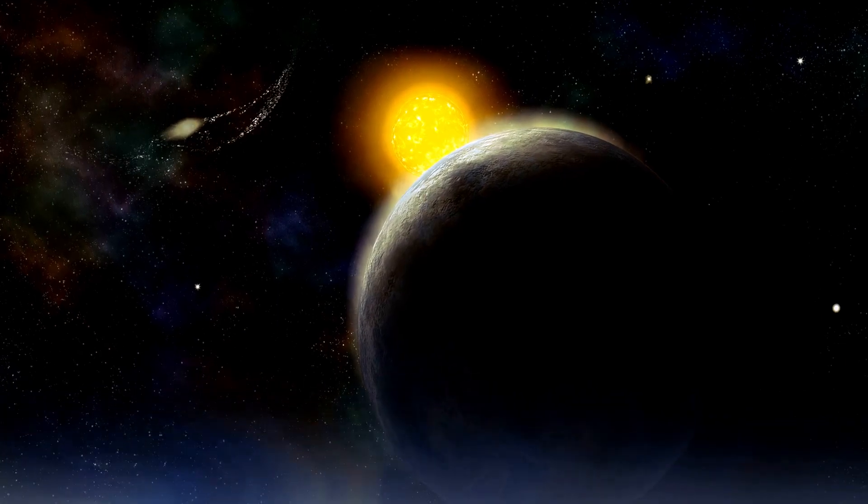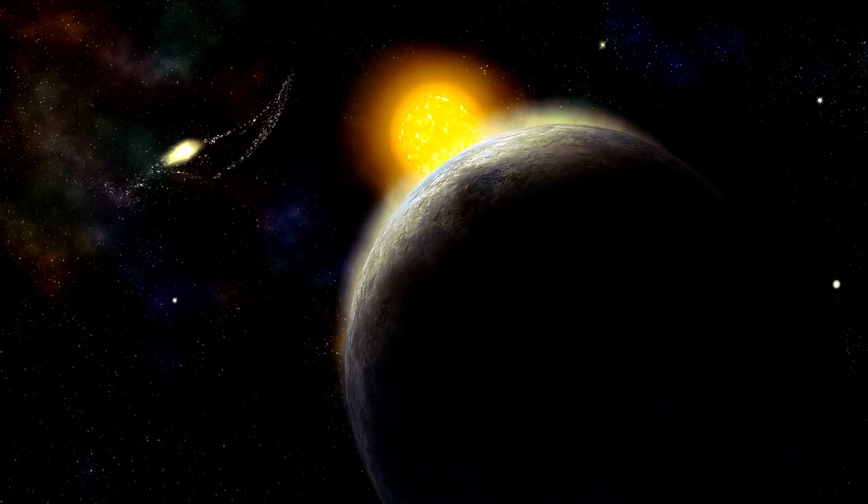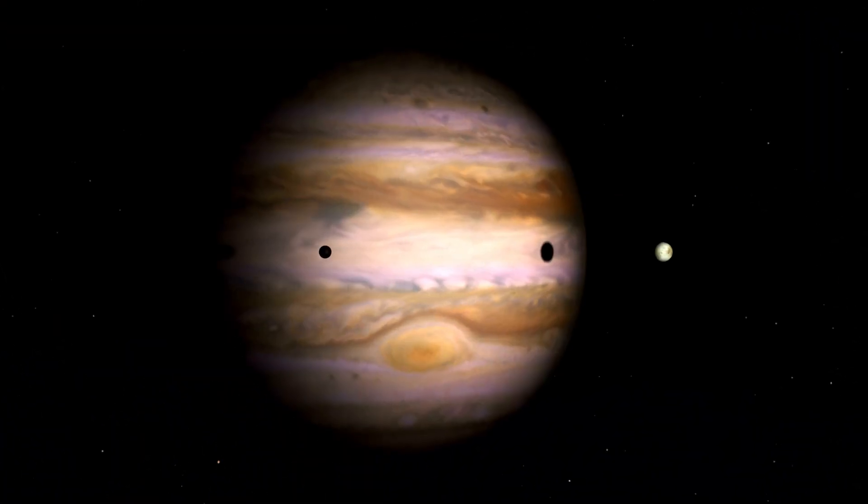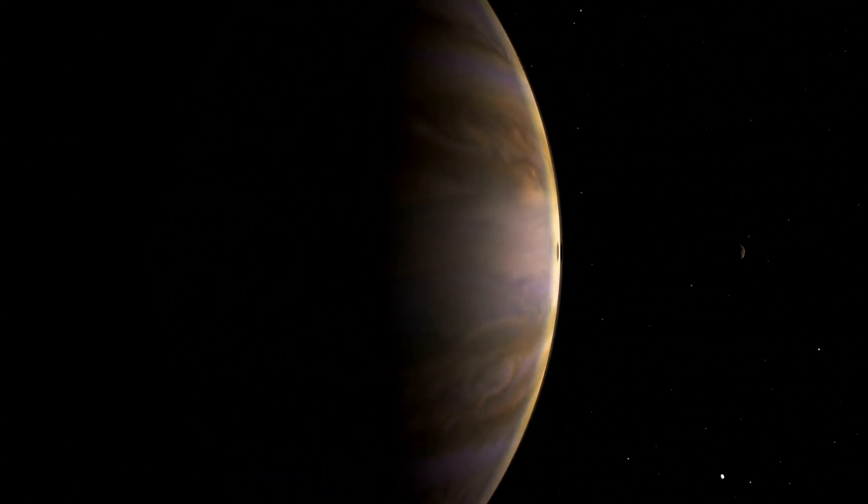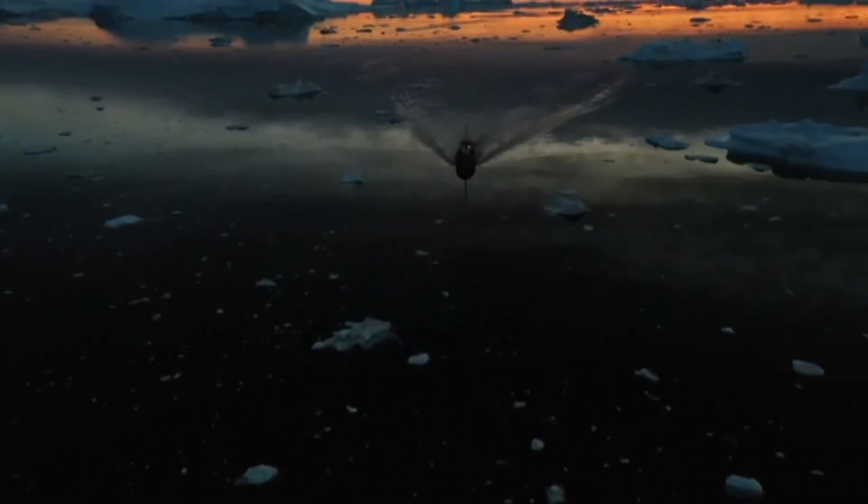Twenty years ago, there were no known planets outside our solar system. But since then, more than 4,000 exoplanets have been discovered orbiting other stars. According to NASA, the universe may contain trillions of exoplanets.